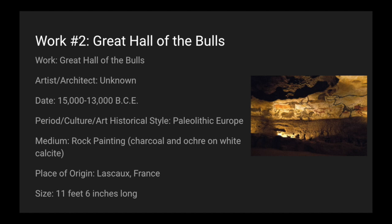Today we'll be looking at the Great Hall of Bulls, which is work number two. The artist-architect is unknown, and it can be dated around 15,000 to 13,000 BCE. It's from Paleolithic Europe. The medium is rock painting, specifically charcoal and ochre on white calcite. It's from Lascaux, France, and it is 11 feet 6 inches long.